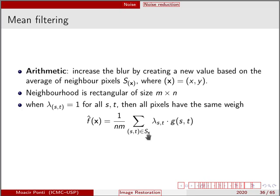The arithmetic mean increases the blur by creating a new value based on the average of neighbor pixels. So neighborhood is often a rectangular of size M times N. And then we have this process here. So we are basically going through all values, coordinates S and T, in the region S of X and then taking the average between all of them. We could have also a weighted version of it by including lambda values as weights defined by S and T. So we have a single value for every pixel and then they would have a different weight.